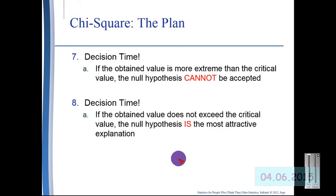And again, if the obtained value is more extreme than the critical value, the null hypothesis cannot be accepted, i.e. the differences that we are observing probably did not happen by chance. And if the obtained value does not exceed the critical value, then the null hypothesis is our most attractive explanation, i.e. we have no evidence that the findings that we are observing did anything but happen by chance.